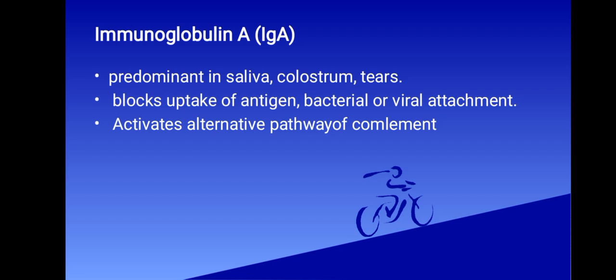Immunoglobulin A also activates the alternative pathway of complement. Secretory immunoglobulin A can play an important first line of defense in antigen clearance by binding to antigens that leak across an epithelium and transporting them back across to prevent their entry.